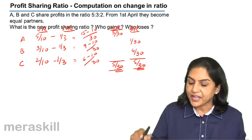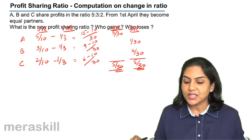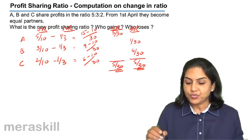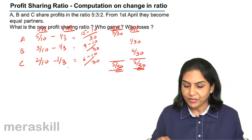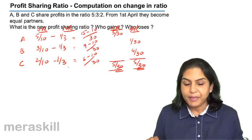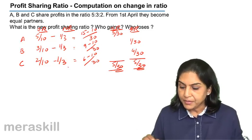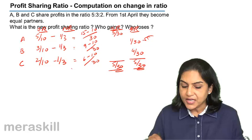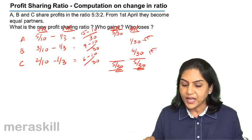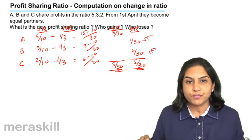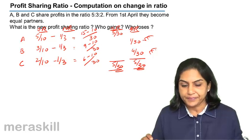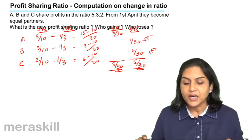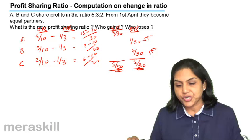A has sacrificed 5 by 30. So this is the new profit sharing ratio: 1 by 3, 1 by 3, 1 by 3. Who gains? B and C happen to gain. B gains by 1 by 30. C gains by 4 by 30. Who loses? A loses by 5 by 30. This is the effect of the change in the profit sharing ratio.